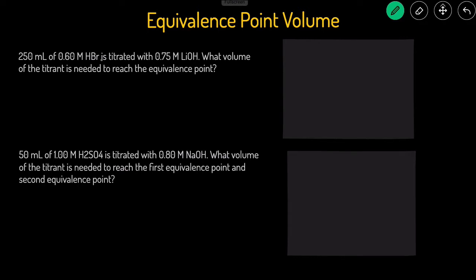250 milliliters of 0.6 molar HBr is titrated with 0.75 molar LiOH. What volume of the titrant is needed to reach the equivalence point? So just two terms: analyte and titrant. Analyte is what you're starting with, and then titrant is what you're adding. So our analyte here is the HBr, and then the titrant, the thing that we're adding to it, is the LiOH.